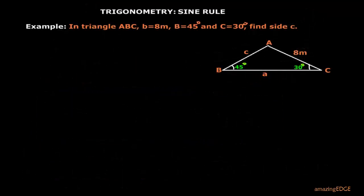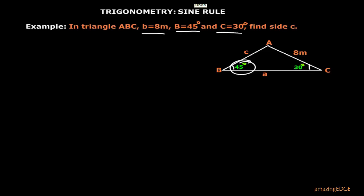In this example, in triangle ABC, side b is 8 meters, angle B is 45 degrees, and angle C is 30 degrees. We need to find side c. We have two angles and one side, so the sine rule applies and we will make use of it.